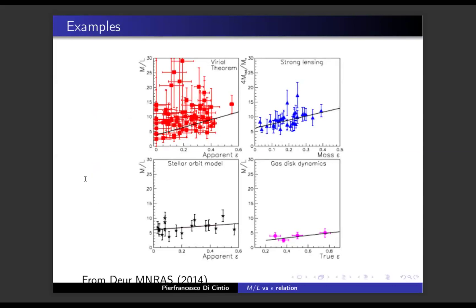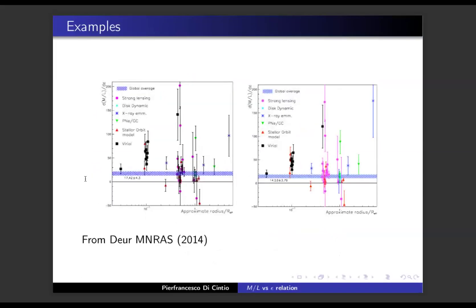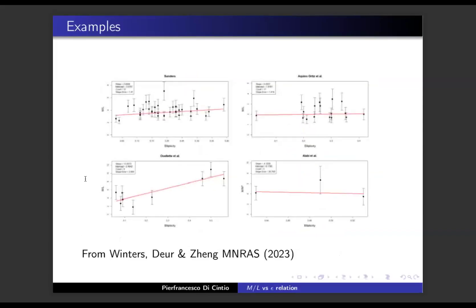Here we have an example of how the empirical linear relation between the mass-to-light ratio and the apparent and intrinsic ellipticity looks when expressed in terms of observed quantities from different surveys — virial theorem calculations, lensing, stellar orbit models, and gas disk dynamics. These are more recent results showing the scatter of the aforementioned relations, including a paper from last year using a broader set of galaxies where some criteria were relaxed, resulting in increased scatter.